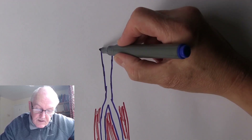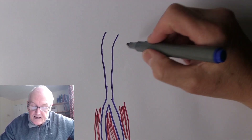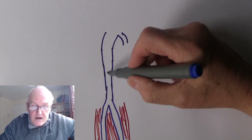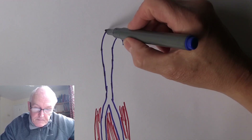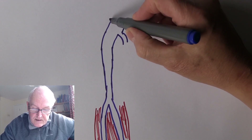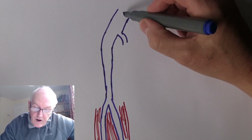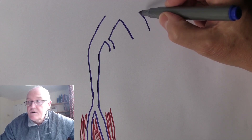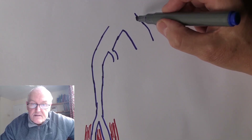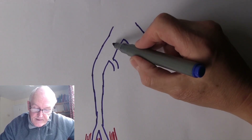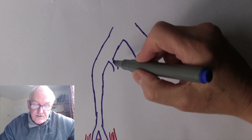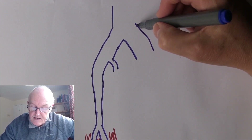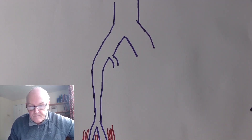The femoral vein carries on getting bigger and becomes the external iliac vein. The internal iliac vein joins at about this level as well, but the main vessel carrying blood back from the leg is the external iliac vein. This continues into the common iliac vein — again getting wider — and of course there is one from the other leg with essentially the same arrangement. The common iliac vein, formed after the internal iliac joins the external iliac, then becomes the inferior vena cava, getting much wider.